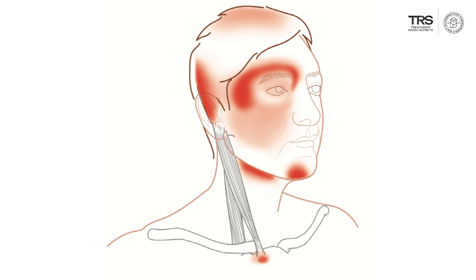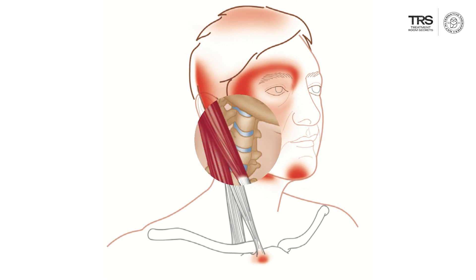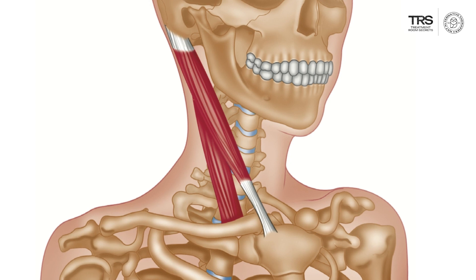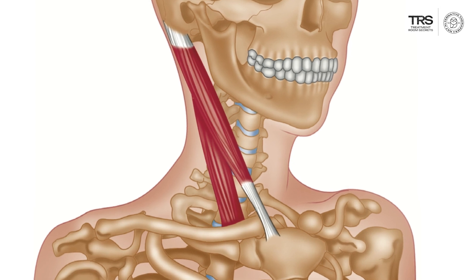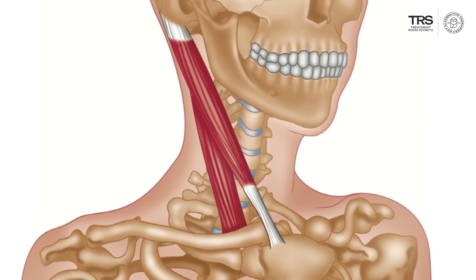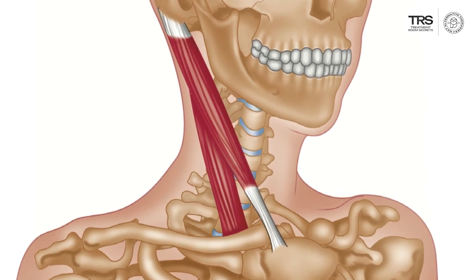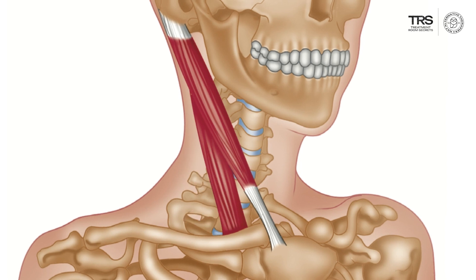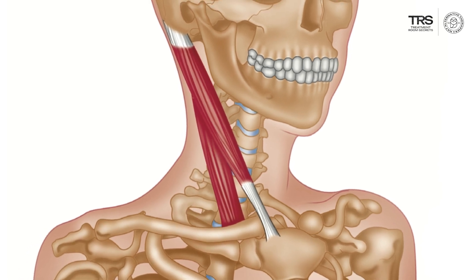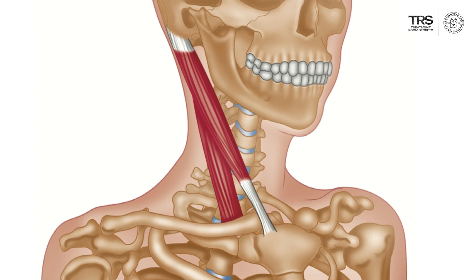Now we'll look at the trigger points found in the clavicular division, the deeper one. There are fewer trigger points: the first is up high, the second is absolutely mid zone, and the third is low down, quite close to where it attaches to the clavicle. The pain distribution here is quite different.